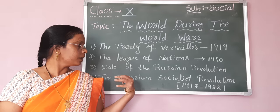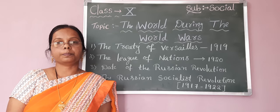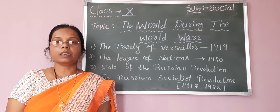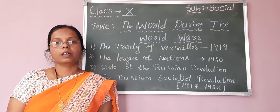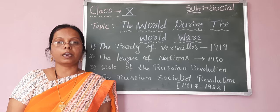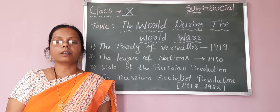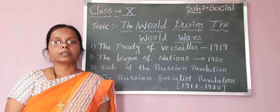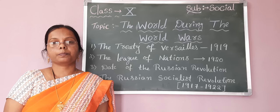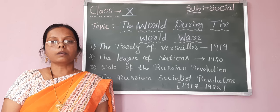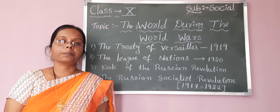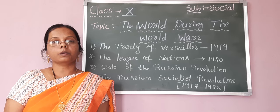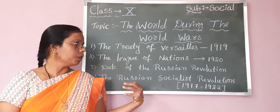The next topic is the date of the Russian Revolution. Russians followed the Julian calendar until February 1st, 1918. Later they changed to the Gregorian calendar, which is the calendar followed everywhere. The Gregorian calendar is 13 days ahead of the Julian calendar. So the October Revolution actually took place in the month of November, and the February Revolution took place in the month of March. This is about the calendar followed by the Russians.